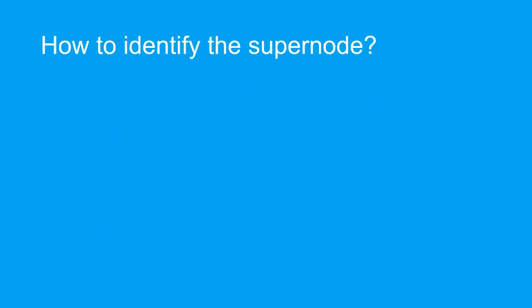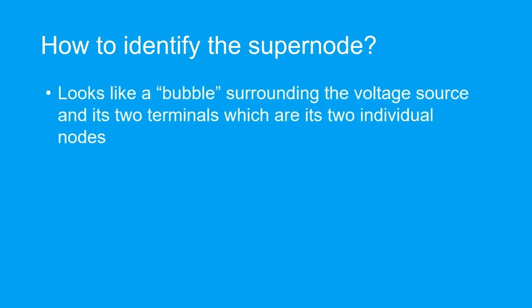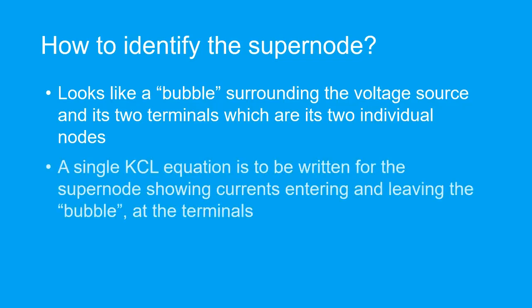How do we identify a supernode? A supernode will look like a bubble that contains the voltage source and its two terminals. These two terminals are considered as two individual nodes. After identifying the supernode, we will have to write a single KCL equation for the supernode, showing currents entering and leaving the bubble at the terminals.